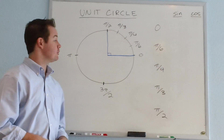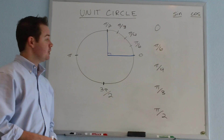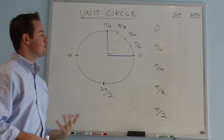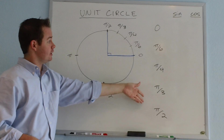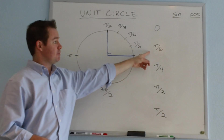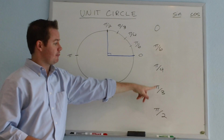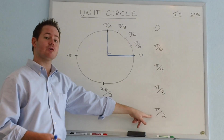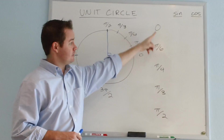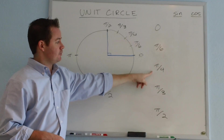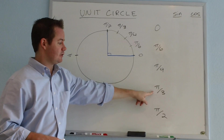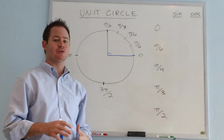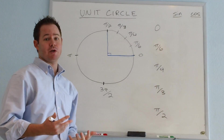We're going to start by looking at just the first quadrant of our unit circle, which goes from 0 all the way up to pi over 2. We see the radian measures listed in our chart and marked on a circle. It goes from 0 to pi over 6, pi over 4, pi over 3, all the way up to pi over 2. That corresponds to degree measures of 0, 30, 45, 60, and 90 degrees. But today we're going to be talking about these in terms of their radian measures.